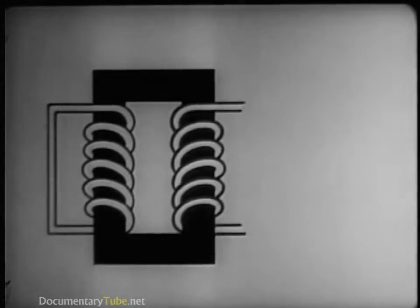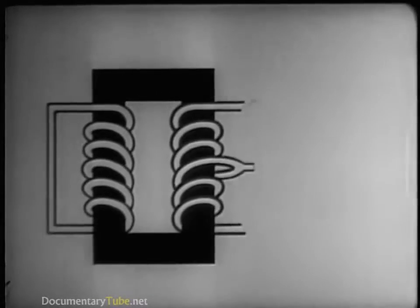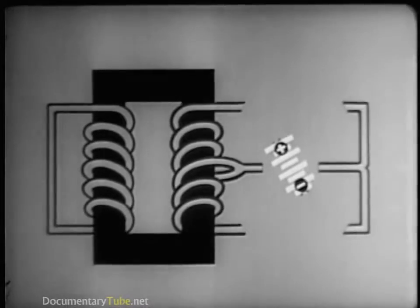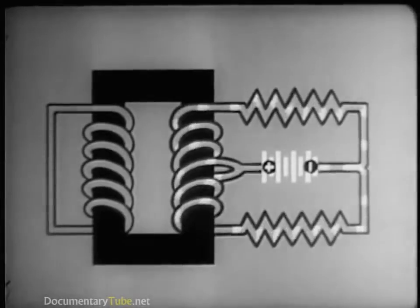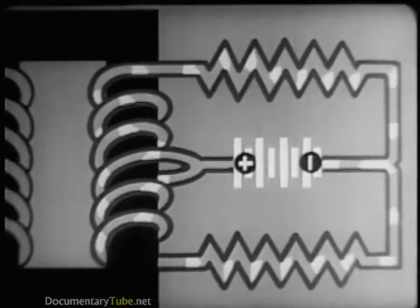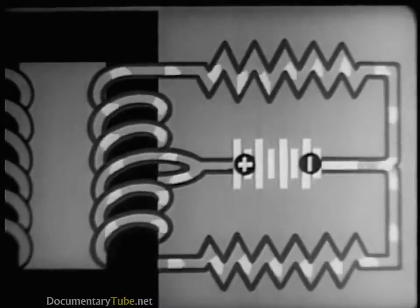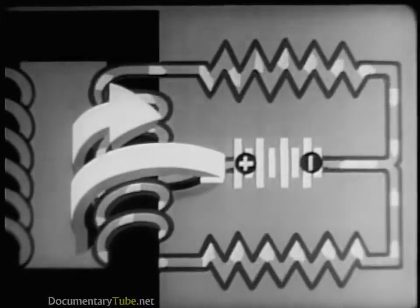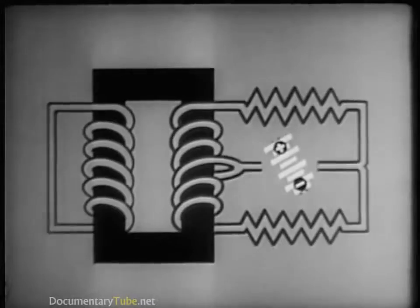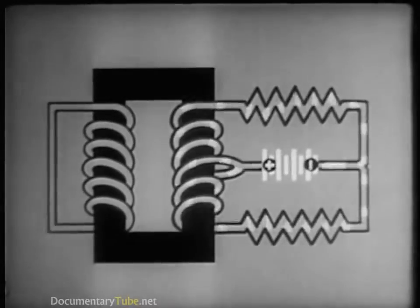But suppose we want current to flow in one winding without producing any effect whatever in the other winding. We can do this by connecting the exact midpoint of one winding to one side of our current source, and connecting the other side through equal resistances to both ends of the winding. Because the resistances are equal, the current divides equally between the two halves of the winding — there are now two equal currents flowing in opposite directions. Their magnetizing effects cancel each other, so no flux is produced in the core. Consequently, no current is induced in the second winding even when the current in the first winding is changing. The same principle applies to alternating current.